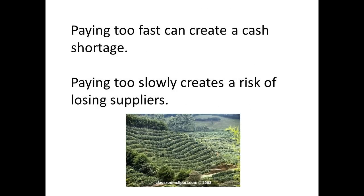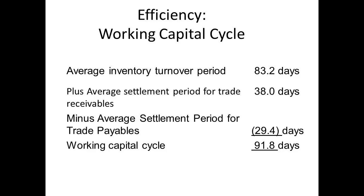Getting this figure right is a juggling act: if payments are made too fast a cash shortage can be created, whilst if payments are made too slowly there is a risk of losing suppliers. The final figure in this section is the working capital cycle, determined by adding the turnover period and the settlement period for receivables, then subtracting the settlement period for payables. In this example the result is 91.8 days. From taking delivery of inventory to disposing of it, plus the time waiting for payment, shows the number of days between an item bought, sold and payment received. Capital is tied up during this period, but we can subtract the time we wait to pay a supplier, since this reduces the time the capital is unavailable for any other use.